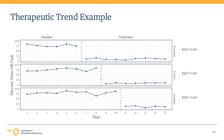For designs like multiple baseline designs, where there are multiple initial baselines, each initial baseline being reviewed as part of a finding must meet the requirements for therapeutic trend for a study to receive the highest possible research rating. In this particular example, if any of these three baselines had yielded a non-overlap of all pairs greater than 0.85, the highest possible research rating those findings could receive would be meets WWC standards with reservations.